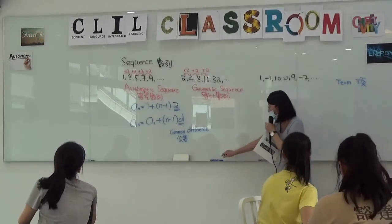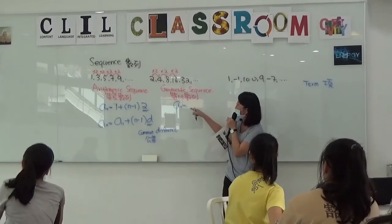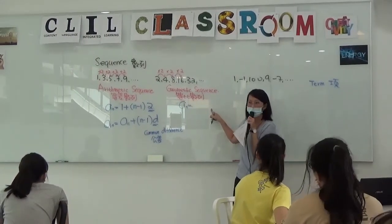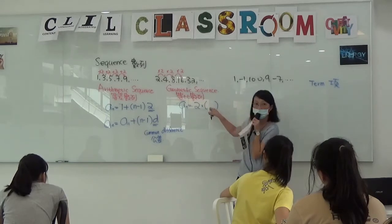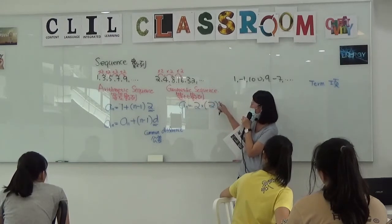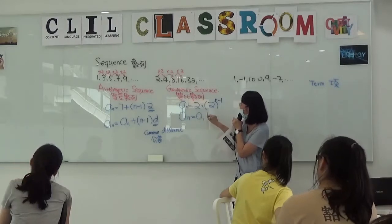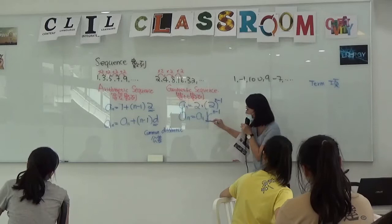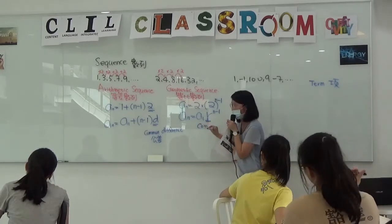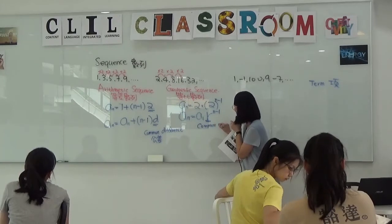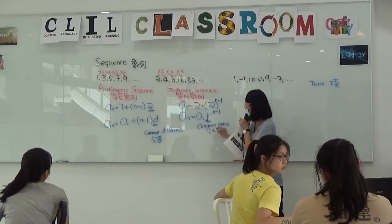I want to write down the formula of the geometric sequence. Just look at this sequence — how can I write down the formula? In general: A_n = A_1 times r to the power of (n − 1). So what is r here? Common ratio. Yes, common ratio. In Chinese it's 公比 (gōng bǐ), meaning ratio.